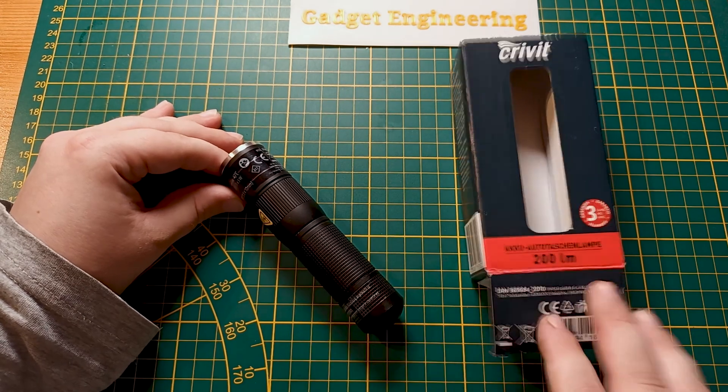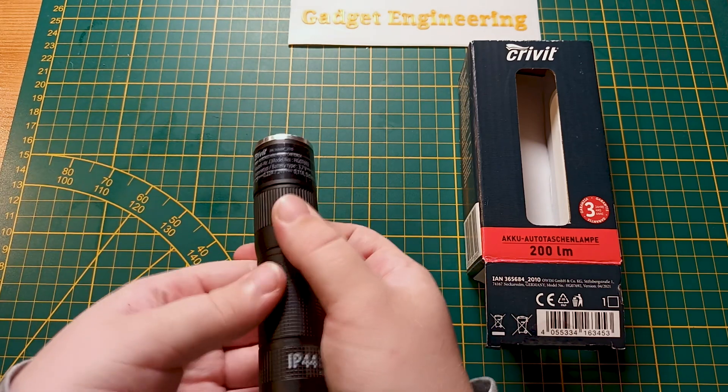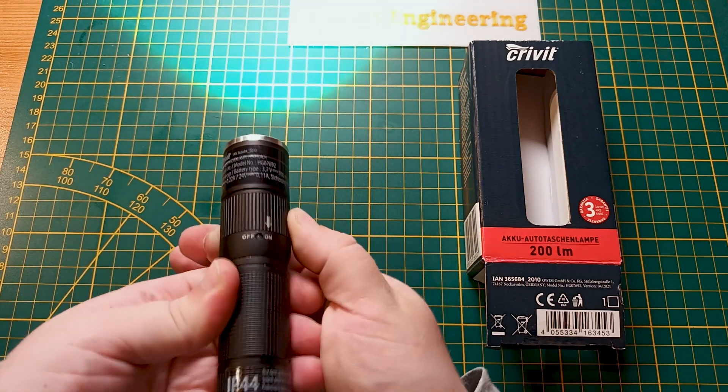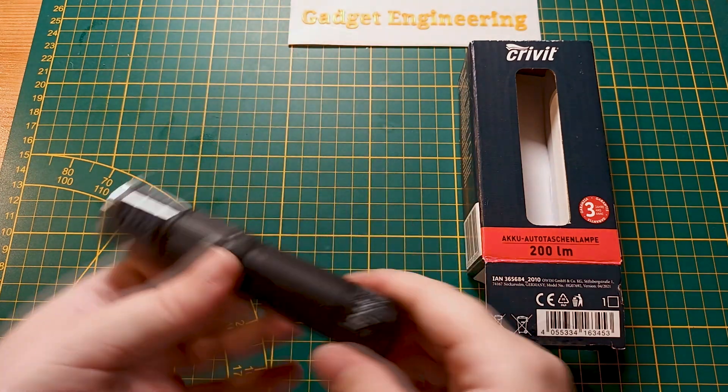But you start off with full 5 watt power, which should be somewhere around 500 lumens, and then it ramps down. But you can always just regain that maximum power by turning the lamp off and back on, and then you should be back at the top of the ramp.